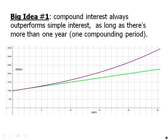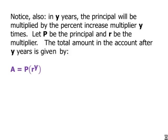By the end of this graph, the compound interest total is over $1,000 more — more than the size of the principal above simple interest. Also notice: in Y years, the principal will be multiplied by the percent increase multiplier Y times. Let P be the principal and R be the multiplier.